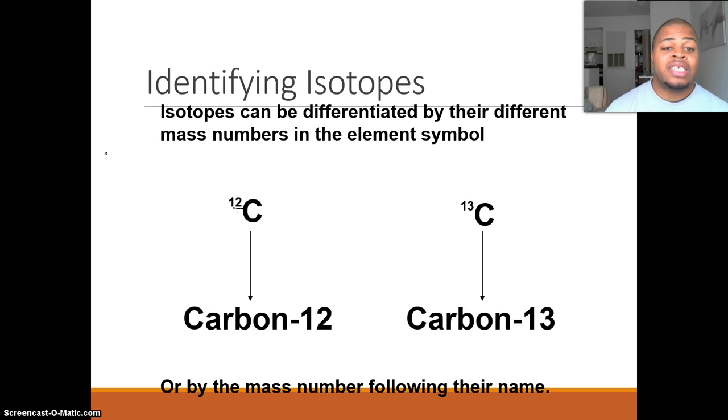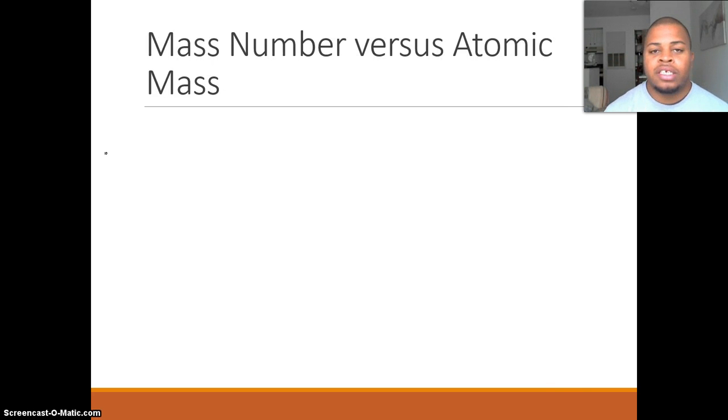These are the main two ways that we'll use when dealing with naming or identifying isotopes. The key here is we want to make sure that the same number of protons, same atomic number, and the same symbol. The mass number, if it changes, we can tell which ones are isotopes.